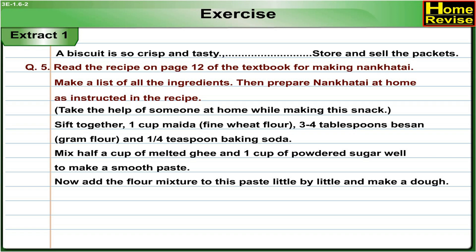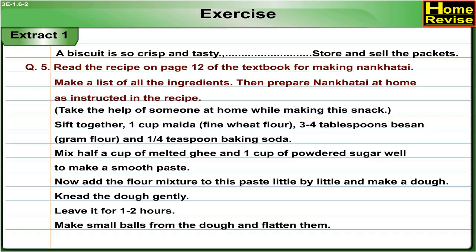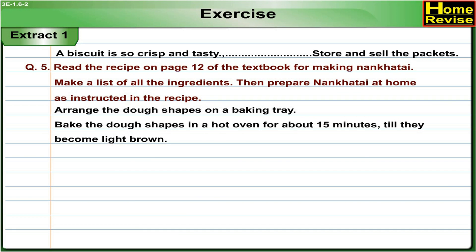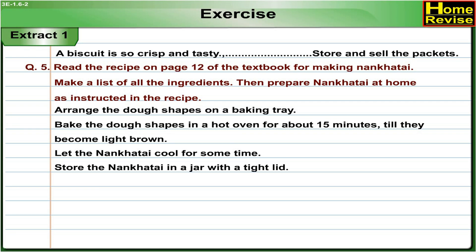Now add the flour mixture to this paste little by little and make a dough. Knead the dough gently. Leave it for 1–2 hours. Make small balls from the dough and flatten them. Arrange the dough shapes on a baking tray. Bake the dough shapes in a hot oven for about 15 minutes till they become light brown. Let the naan khatai cool for some time. Store the naan khatai in a jar with a tight lid.